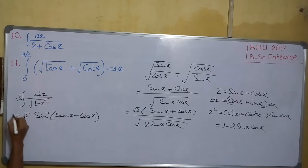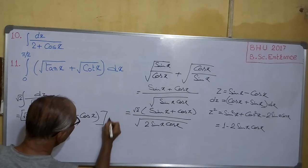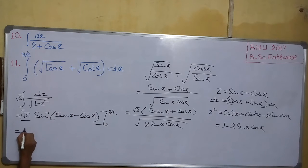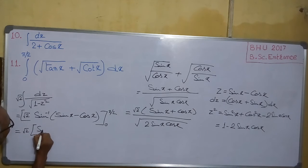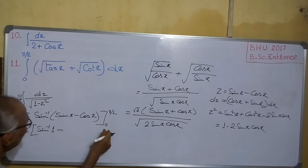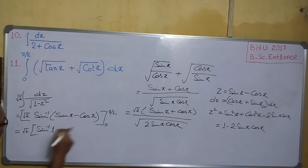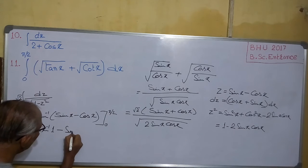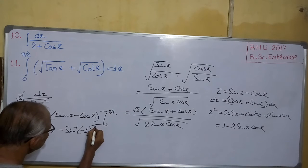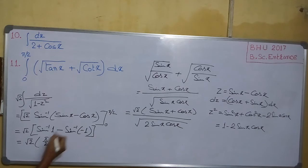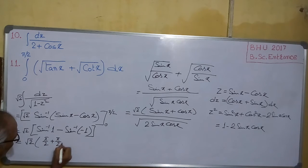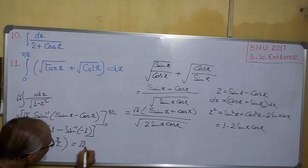So what was the limit? The limit was from 0 to π/2. That equals √2 times [sin⁻¹(sin(π/2) - cos(π/2)) - sin⁻¹(sin0 - cos0)]. sin(π/2) = 1, cos(π/2) = 0, so we get sin⁻¹(1). And sin0 = 0, cos0 = 1, so we get sin⁻¹(-1). That is √2 times [π/2 - (-π/2)] = √2 times π.